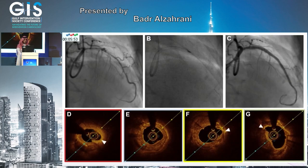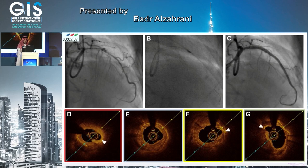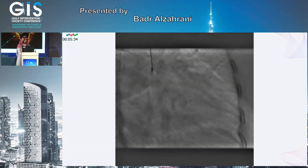This angiogram shows a heavily calcified LAD. OCT below shows 180 degrees of calcium. Post-atherectomy, you can see debulking and cracking of the calcium with successful, well-expanded stent placement.